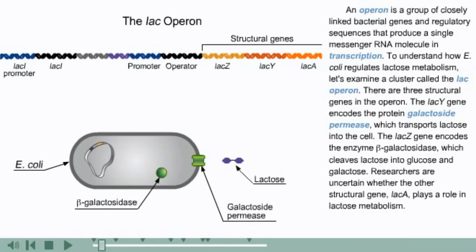An operon is a group of closely linked bacterial genes and regulatory sequences that produce a single messenger RNA molecule in transcription. To understand how E. coli regulates lactose metabolism, let's examine a cluster called the lac operon.